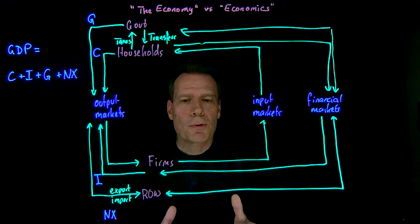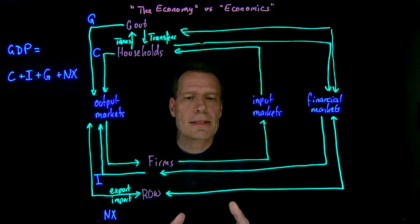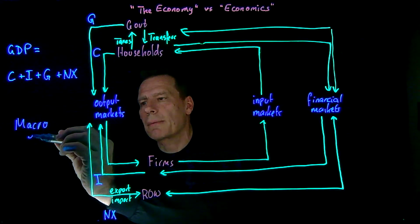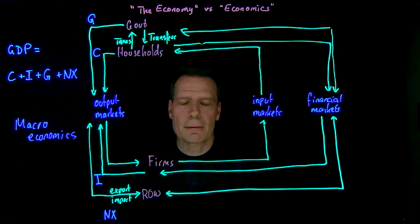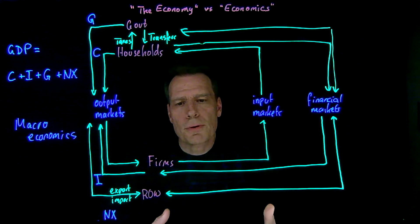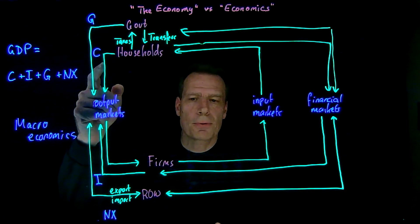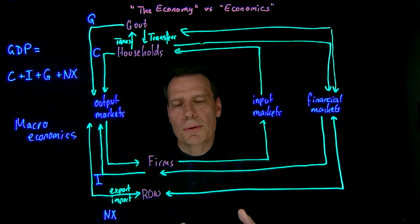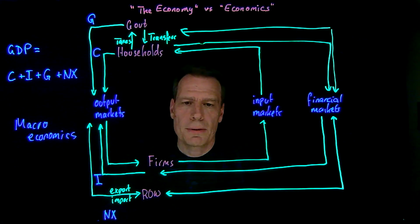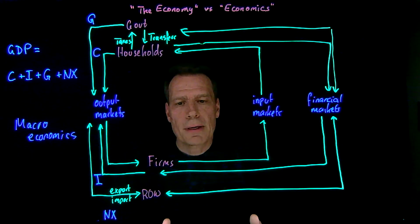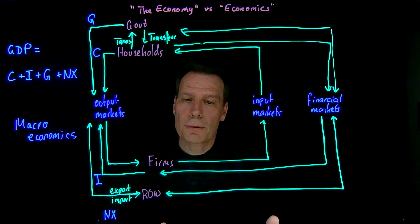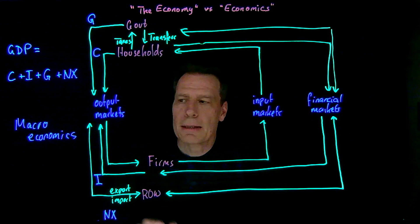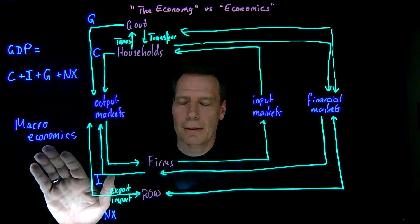This is a depiction of what we mean by an economy, and economists study this system as a whole in a branch of economics called macroeconomics. Macroeconomists think about this system as a whole and try to determine what determines how much of what's being produced is consumed, invested, bought by the government, or makes it into net exports. They study under what circumstances there will be unemployment, whether there will be a recession, how inflation emerges, and how the economy grows in the long run — or why it might stagnate.